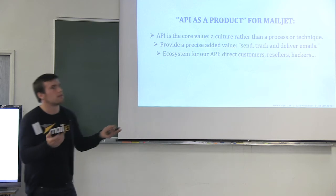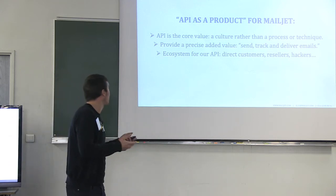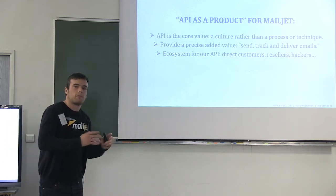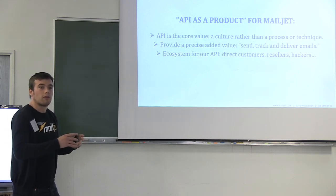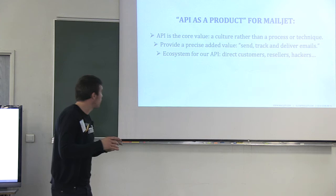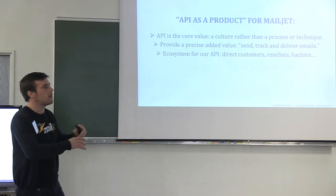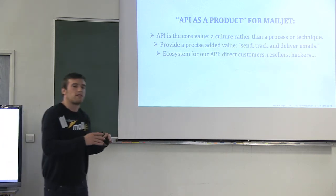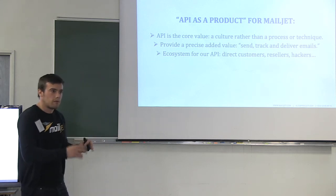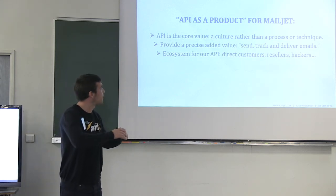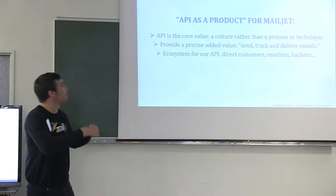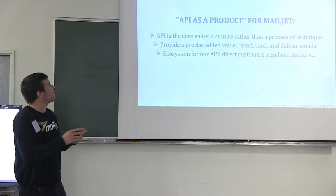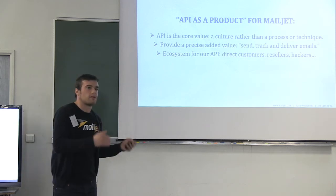Taking MailJet as an example — because we are a product, we are an API, and we are an API as a product. What happens is that the API is the core value of the company. All the developers think and use the API; they think around the API. It's a process and a technique, but it's not just this. It's a product because it provides a very precise added value — we solve a problem. We send, track, and deliver emails consistently. And there is an ecosystem for the API with direct customers, resellers, hackers, et cetera.